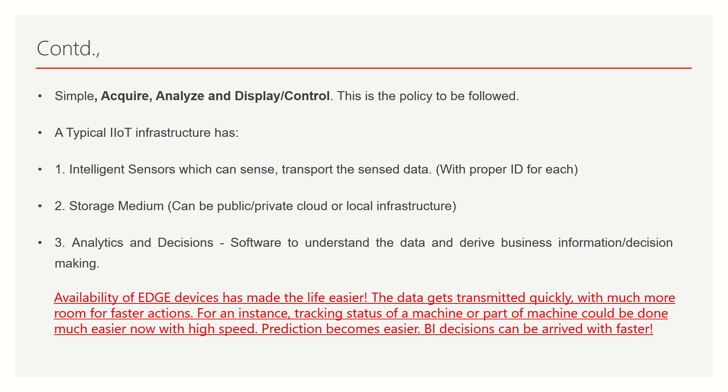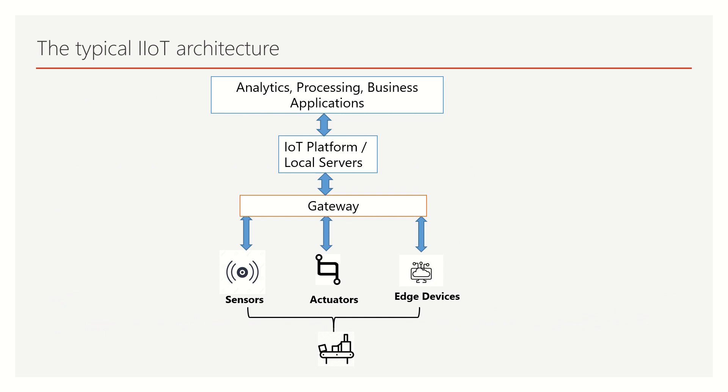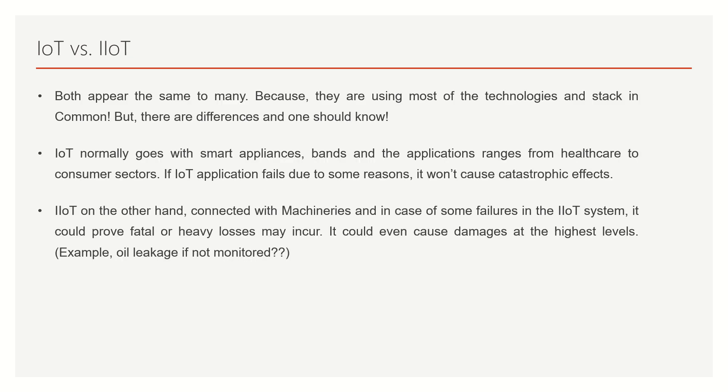I have dealt with edge versus cloud computing and edge versus far computing in detail in my channel — if you have queries you can check those out. In this IoT setup: intelligent sensors acquire data immediately, data transfer happens immediately, and decisions are arrived at immediately. The data can also be stored for future use. I need appropriate edge devices and intelligent sensors to accomplish this. The simple architecture: machines use sensors, actuators, and edge devices to collect and send data through a gateway to an IoT platform or local servers, where analytics processing and business applications run.